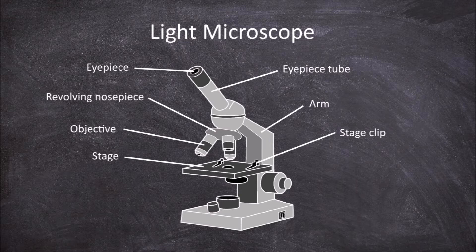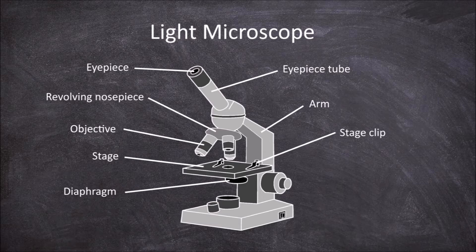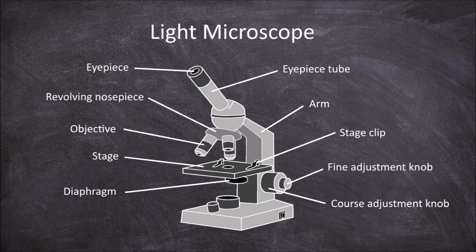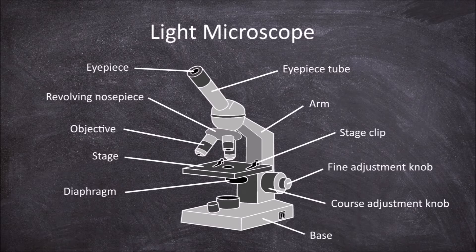Underneath the stage is the diaphragm, also known as the condenser. There is a coarse adjustment knob and a fine adjustment knob. At the bottom you have the base as well as the light source.